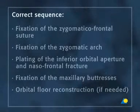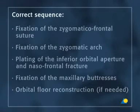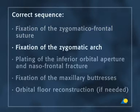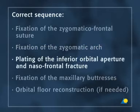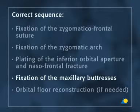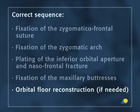The correct sequence to fix this fracture is composed of five steps: fixation of the zygomatic frontal suture; fixation of the zygomatic arch; plating of the inferior orbital aperture and nasal frontal fracture; fixation of the maxillary buttresses; and if needed, orbital floor reconstruction.